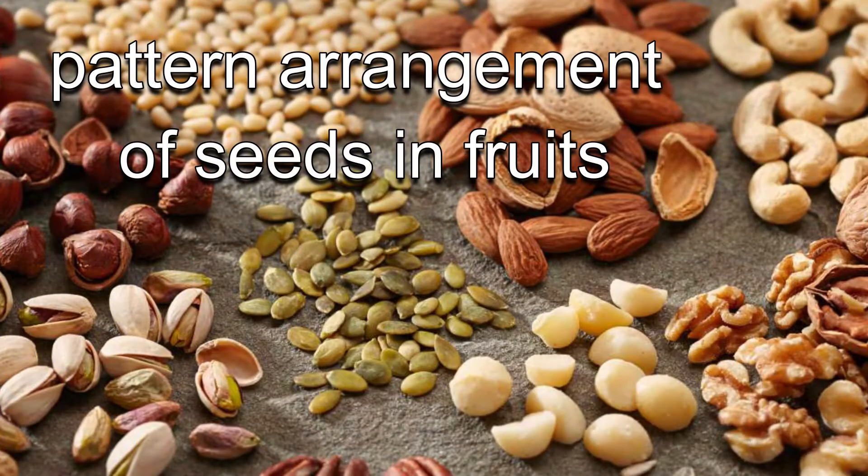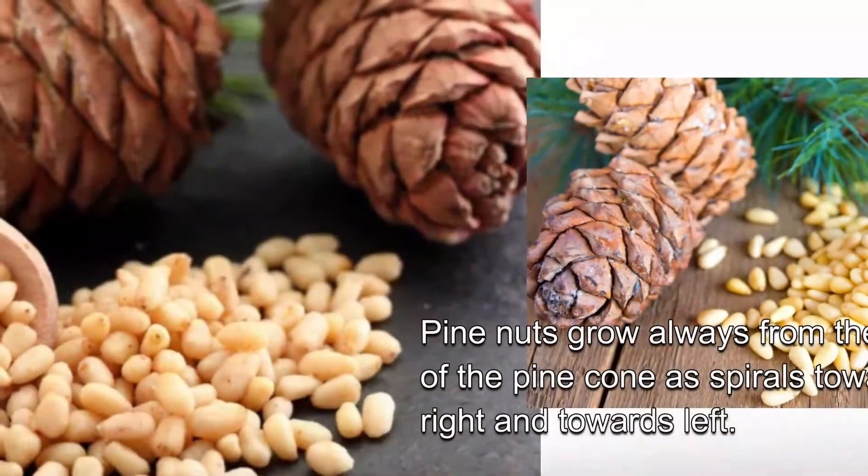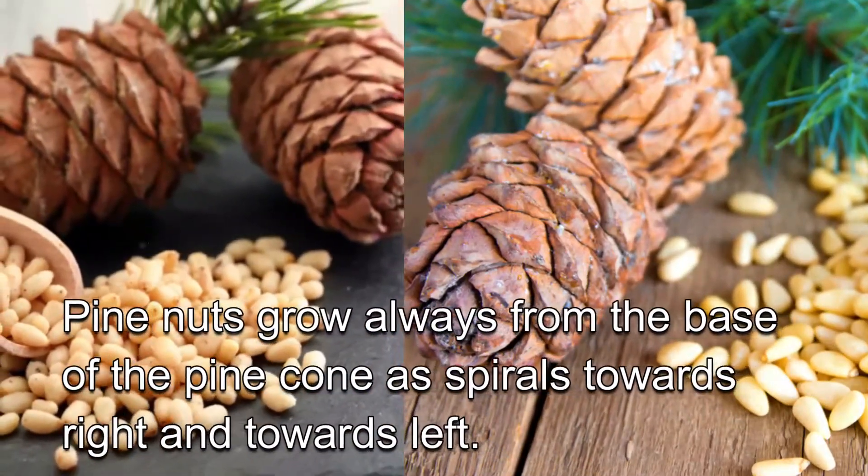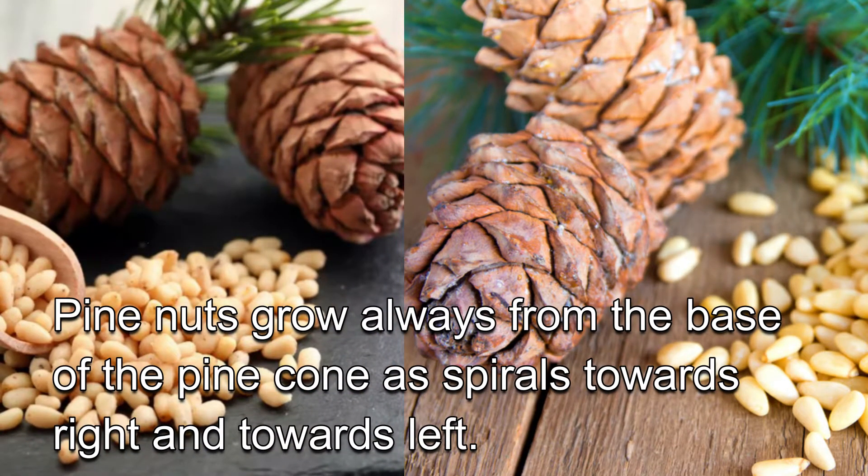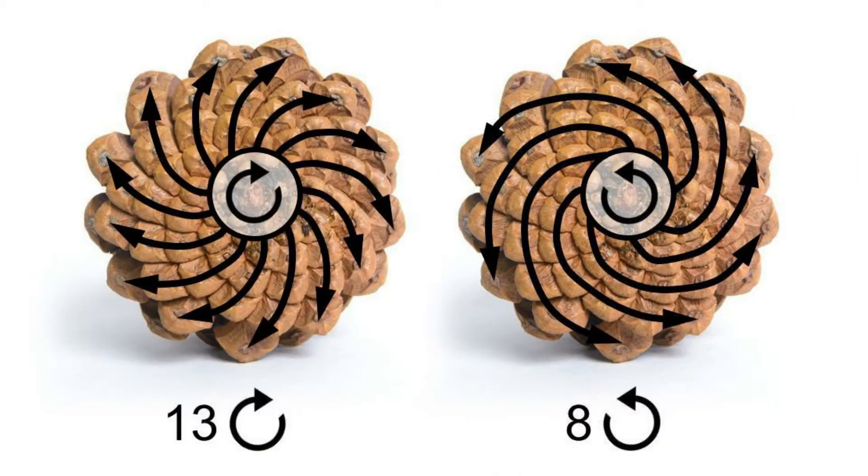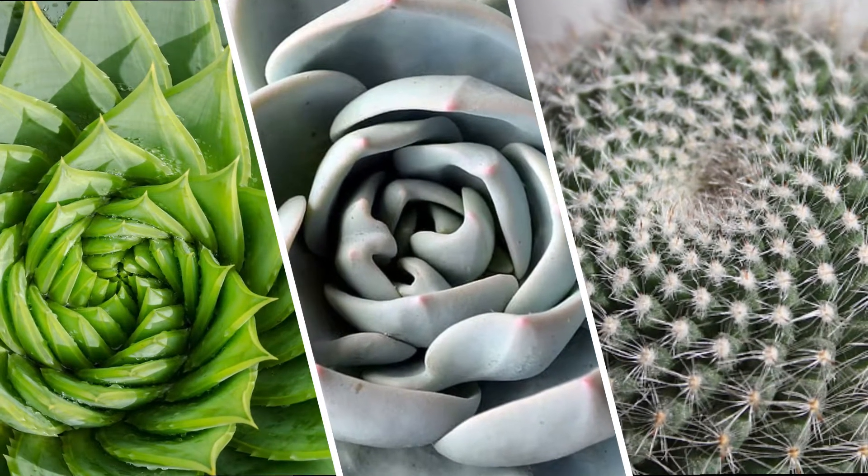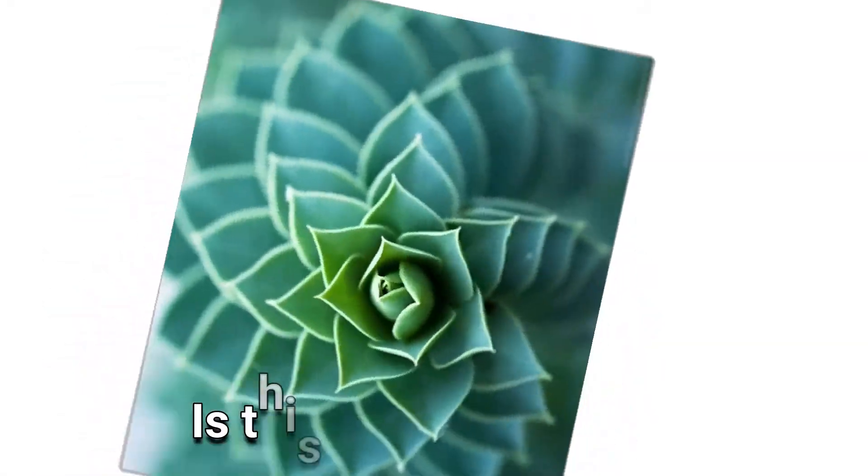We also have pattern arrangement of seeds in fruits. For example, pine nuts. Pine nuts grow always from the base of the pine cone as spirals towards right and towards left: eight spirals spinning counterclockwise and 13 spirals spinning clockwise. The same pattern is also observed in the spirals of some succulents and cacti.